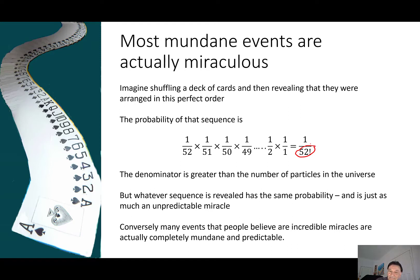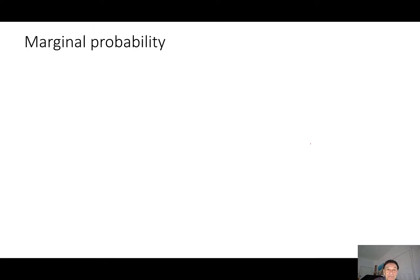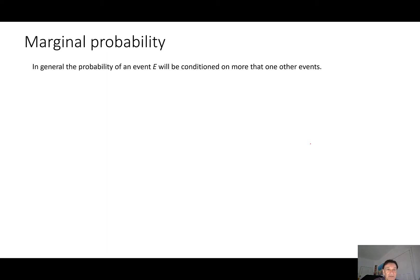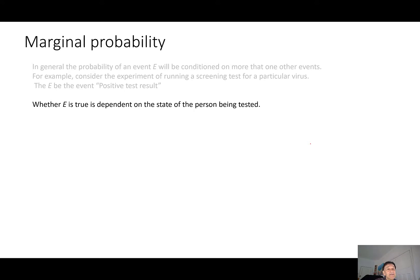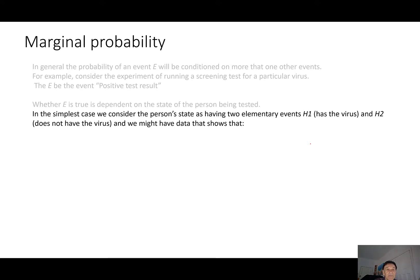Conversely, many events people believe are incredible miracles are actually completely mundane and predictable. Before we get onto Bayes' theorem, we need to consider the idea of marginal probability. In general, the probability of an event is going to be conditioned on more than one other event. Consider the experiment of running a screening test for a particular virus. Let E be the event of a positive test result. Whether E is true depends on the state of the person being tested — in the simplest case: H1, the person has the virus, and H2, the person doesn't.